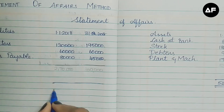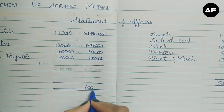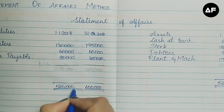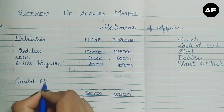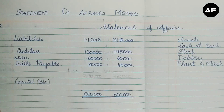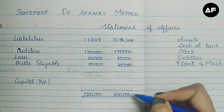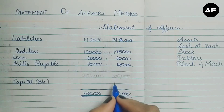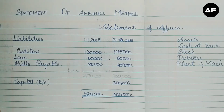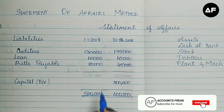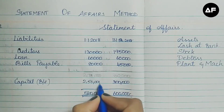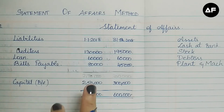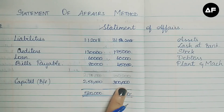Now focusing on the liability side, the capital will appear there as the balancing figure since that side has the lesser total. For 31-12-2018: 6 lakhs minus 3 lakhs gives a closing capital of 3 lakhs. For 1-1-2018: 5 lakh 20,000 minus 2 lakh 70,000 gives an opening capital of 2 lakh 50,000. Both the opening and closing capitals are now in hand, so we can proceed to the statement of profit or loss.